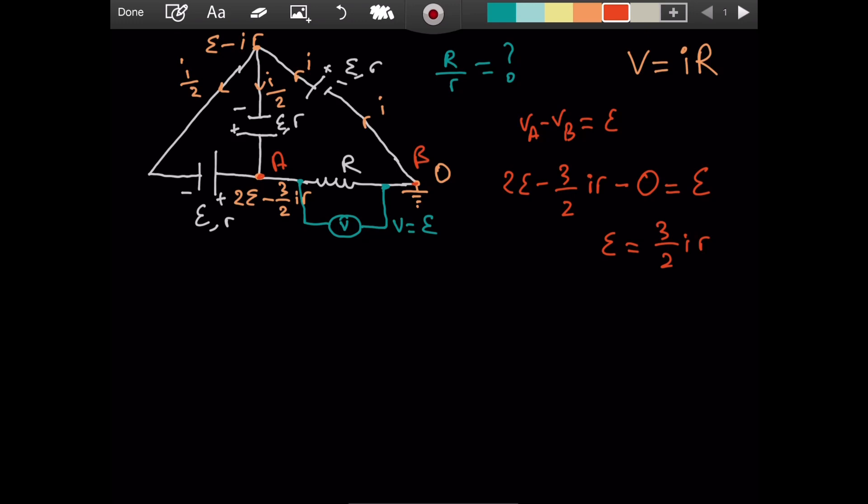Now, how do we connect this to capital R? Well, we use Ohm's law. We know that V, the voltage across a resistor, is equal to i, the current to it, times the resistance value of that resistor. So the voltage across it is going to be epsilon. Right? It's going to be 3 over 2 ir then. Because this is epsilon. The voltage across the resistor is this.